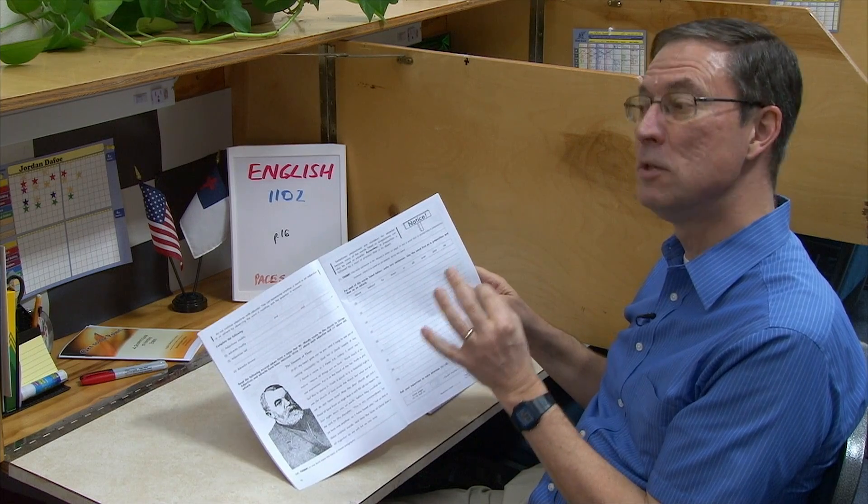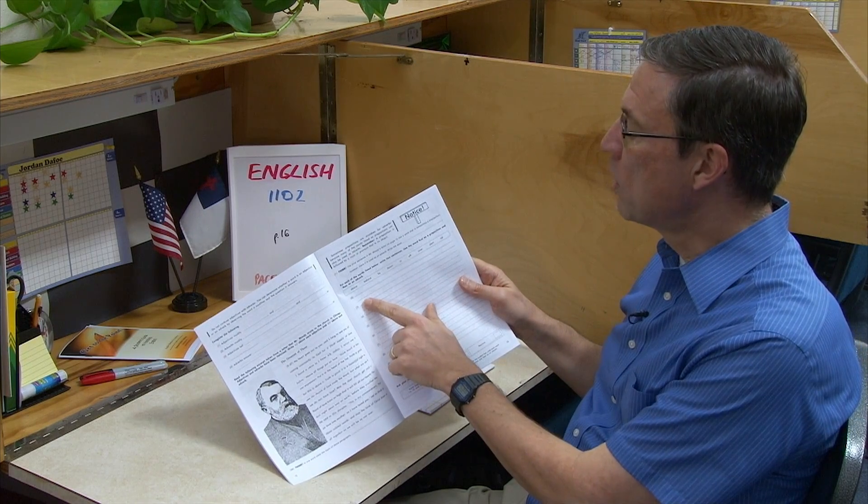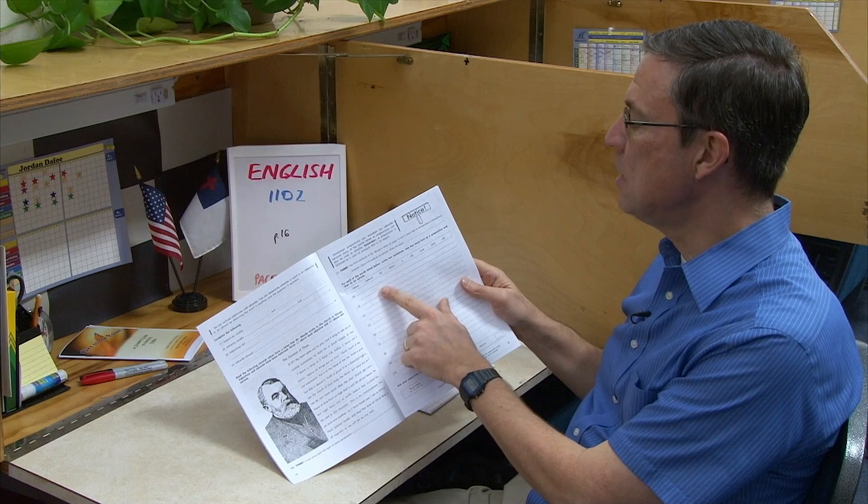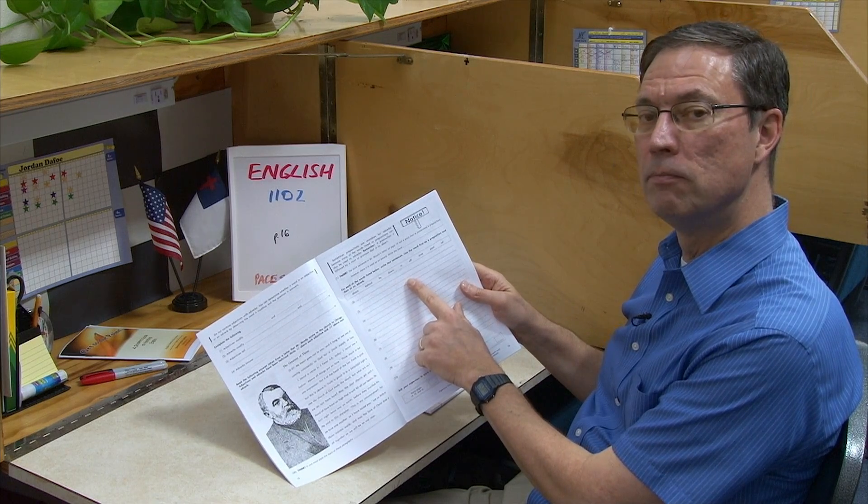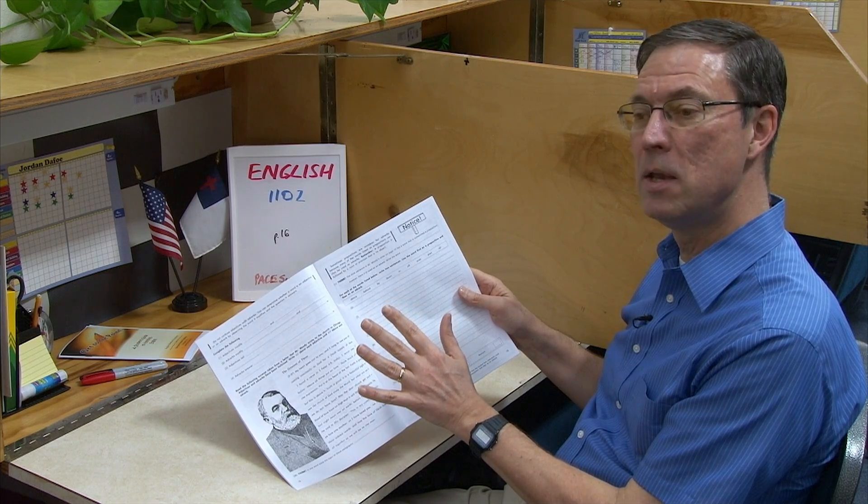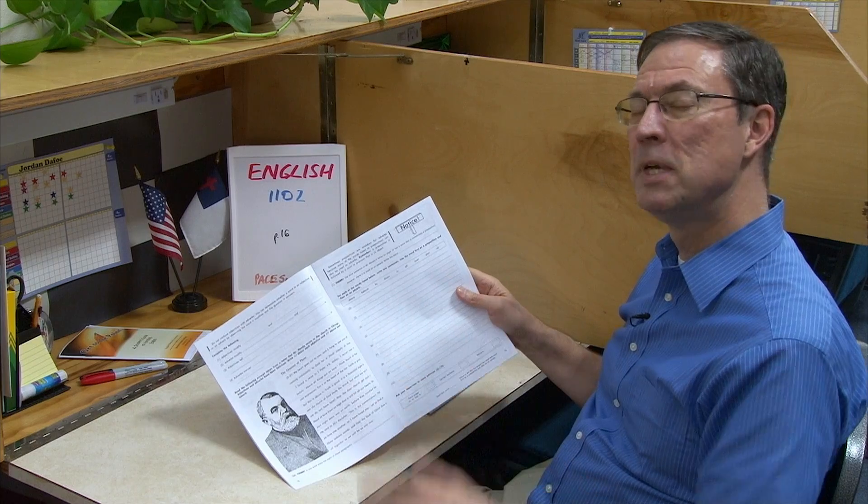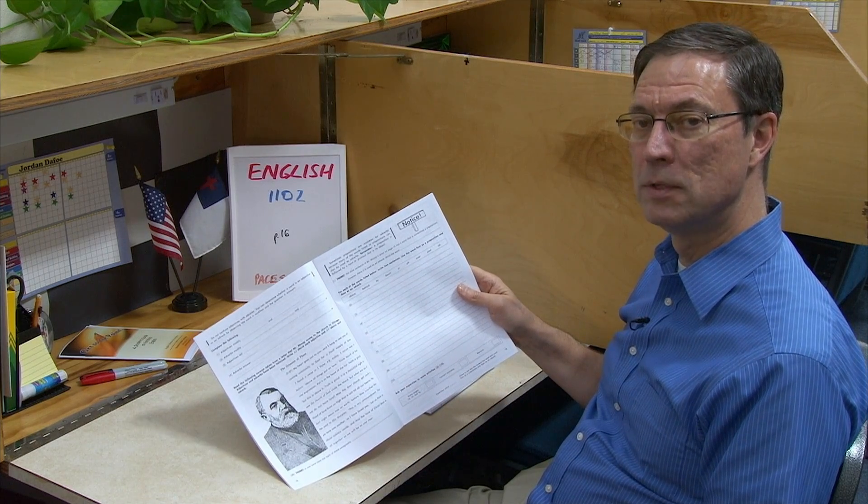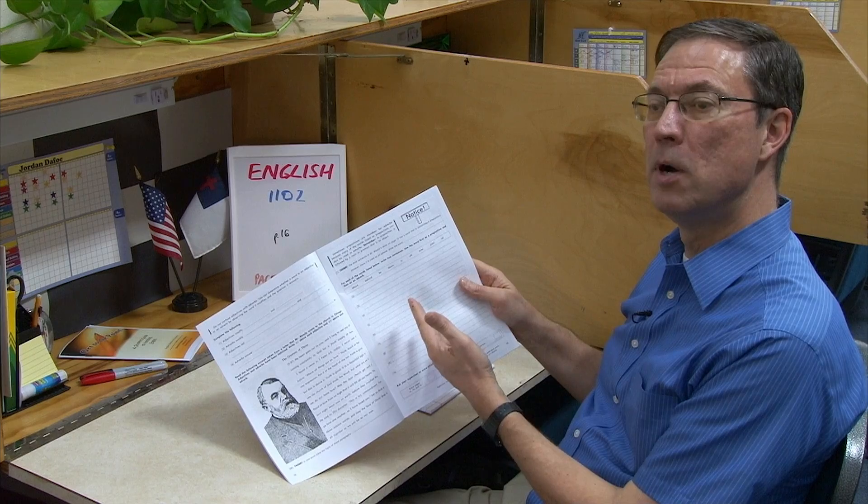So what if I said: I saw an eagle fly above. As soon as I stop at above, it's being used as an adverb. If I add above my head, then it's being turned into a prepositional phrase. So I saw the eagle fly above, period. Now it's an adverb.